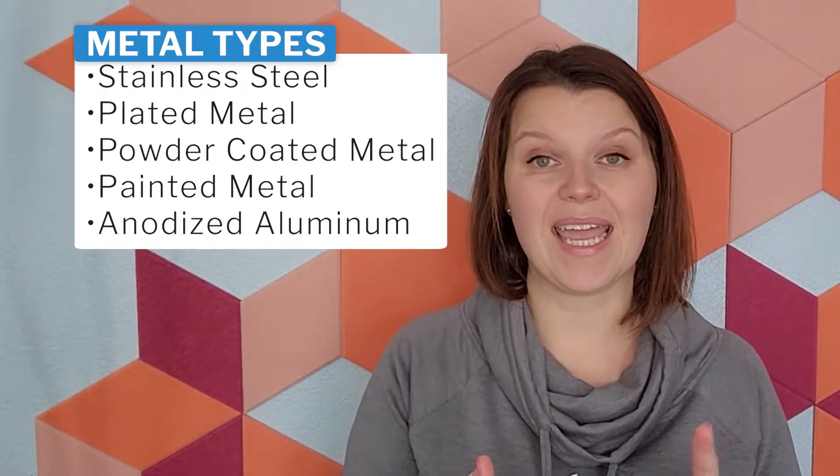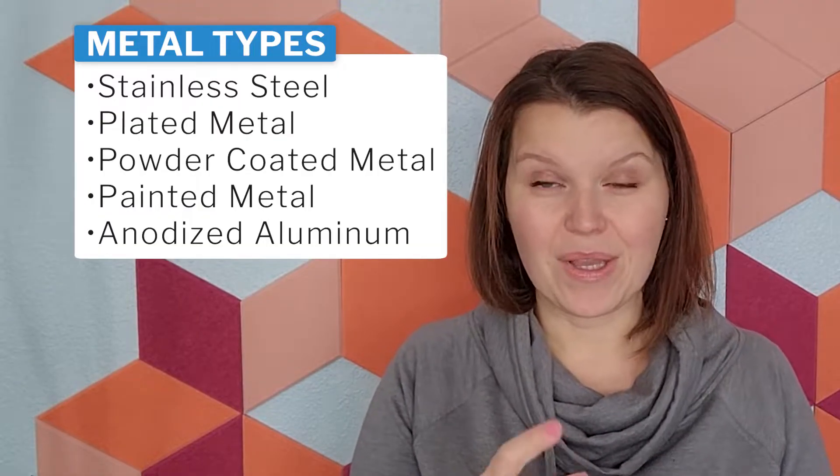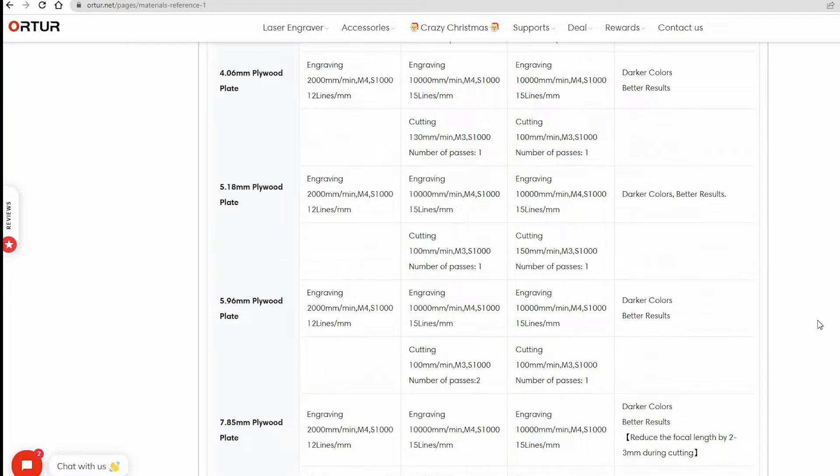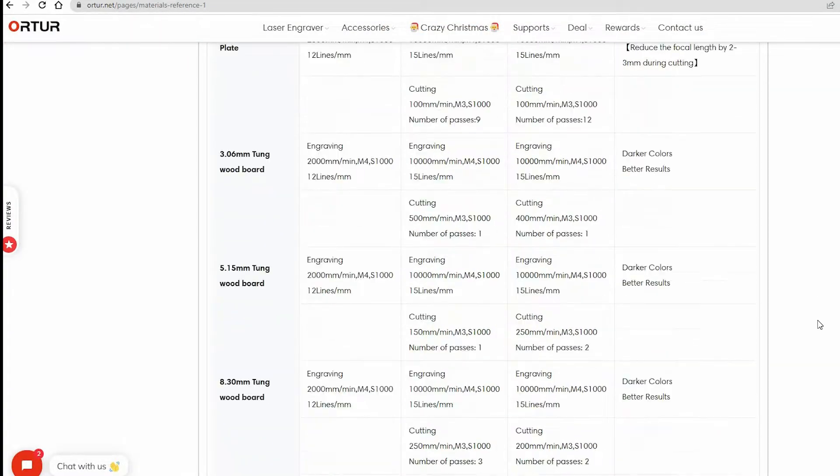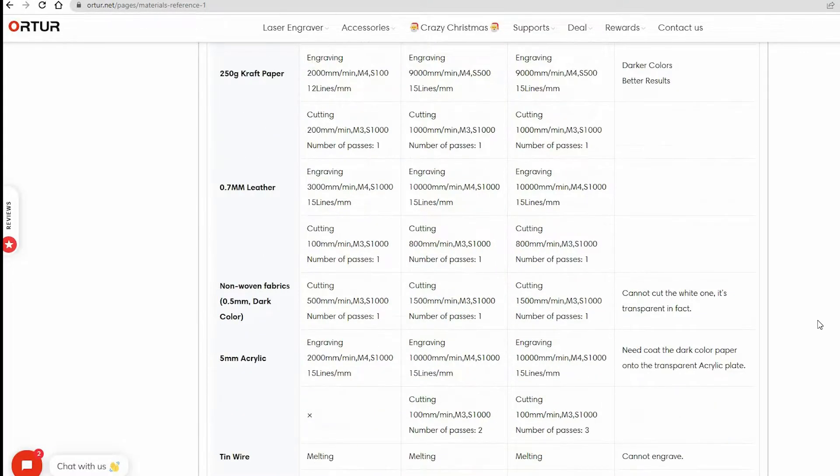As far as engraving metal goes, you can engrave a number of different types with a diode laser, including stainless steel, anodized aluminum, powder coated metal, plated metal, or anything that is painted. I highly recommend taking a look at the Arfero website and their materials reference guide. This is going to give you a detailed list of what you can and cannot engrave and different settings to use.